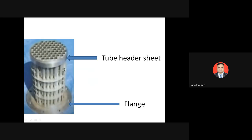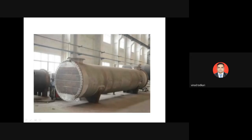This photograph shows an industrial shell and tube type heat exchanger. You can see the large number of tubes used. This gives a clear idea of the scale of such a device.